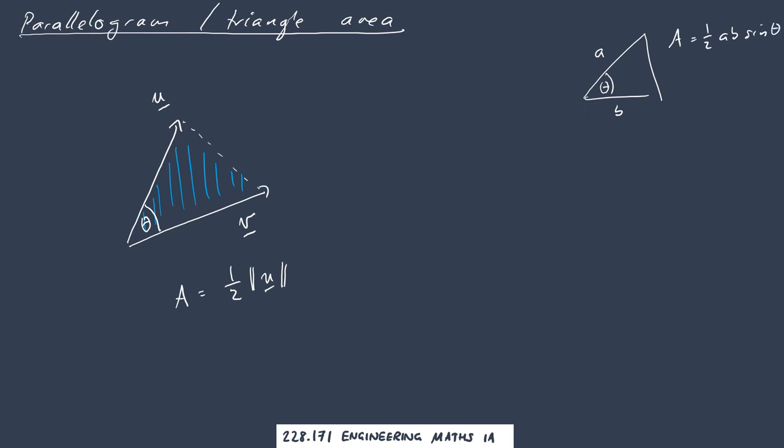So for our triangle here, the side lengths are the lengths of the vectors u and v. So the area will be half length of u, length of v, sine theta. But that is just half the cross product of u and v.